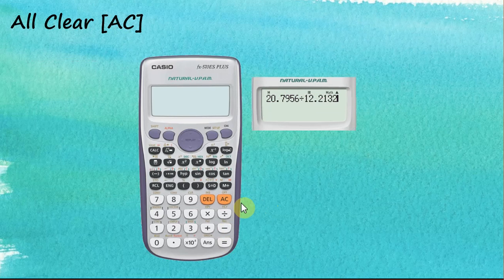We have another button called the AC button or the all clear button which we can use to clear everything on the screen except those icons at this line here. For example, we insert these data and then later on we found that this is not what we want. So we can clear everything by just tapping on this AC button.